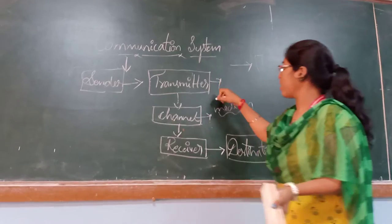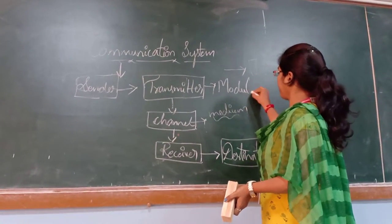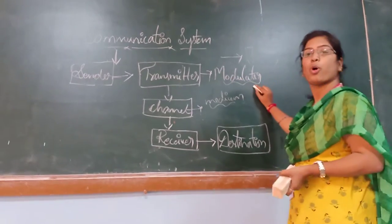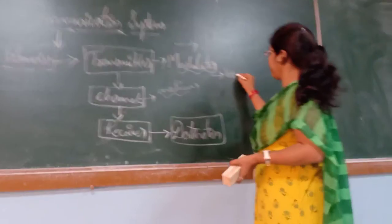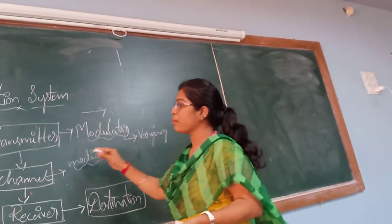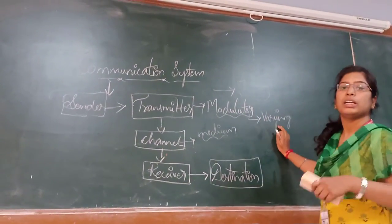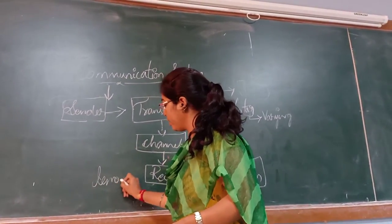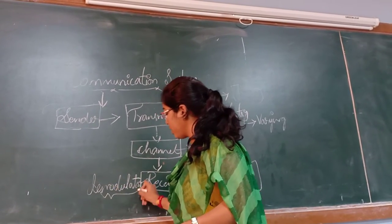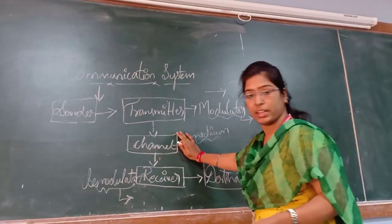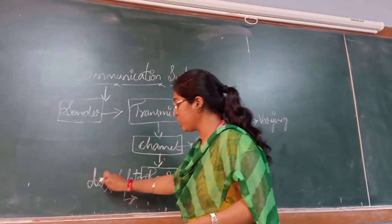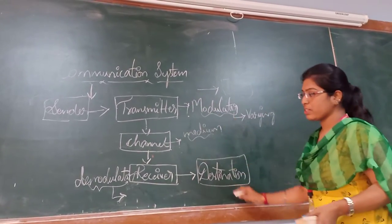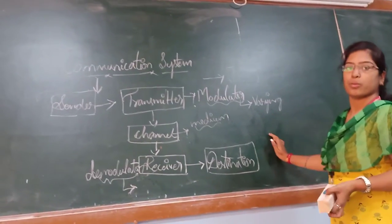Coming to the transmitter section, there will be a modulator. What is the use of this modulator? The modulator will be varying the message signal — whatever message signal we are giving, that signal will be varied according to the content. At the receiver section, there is a demodulator. The demodulator is changing whatever signal we are getting from the channel back into actual information, then transferring it to the destination. So at the transmitter section we have a modulator, and at the receiver section we have a demodulator. This is the actual system of the communication network.